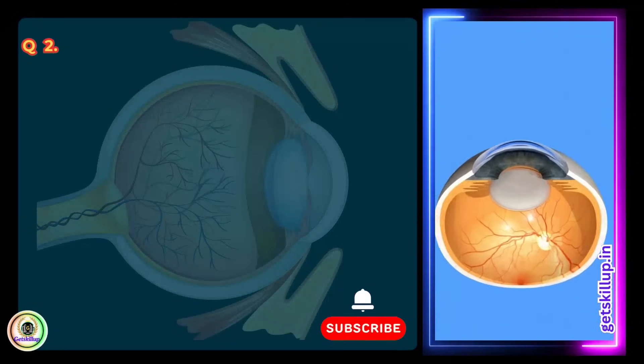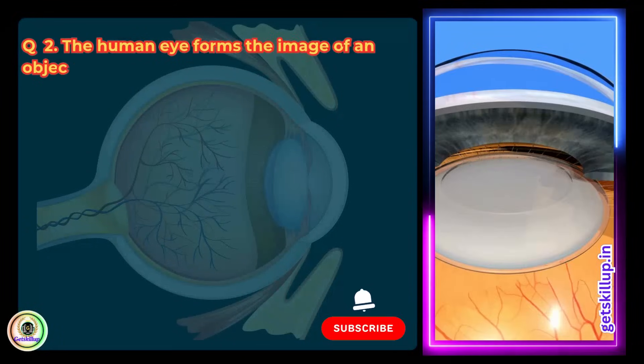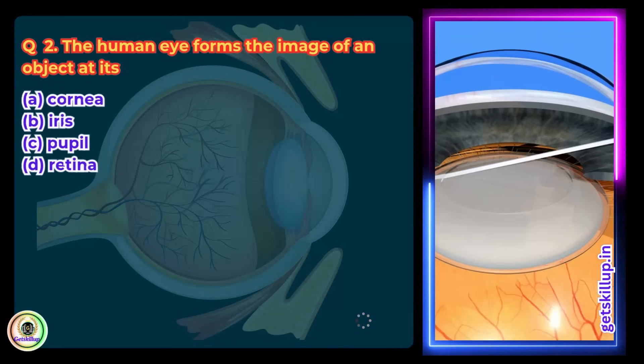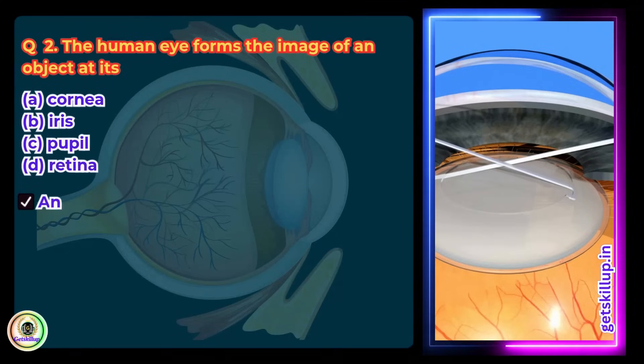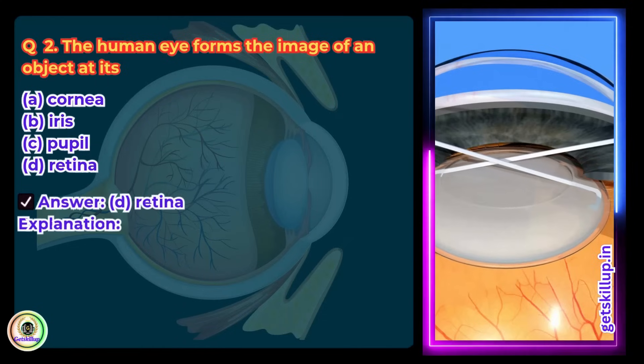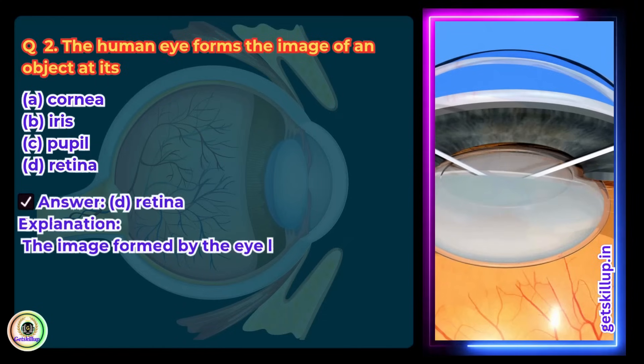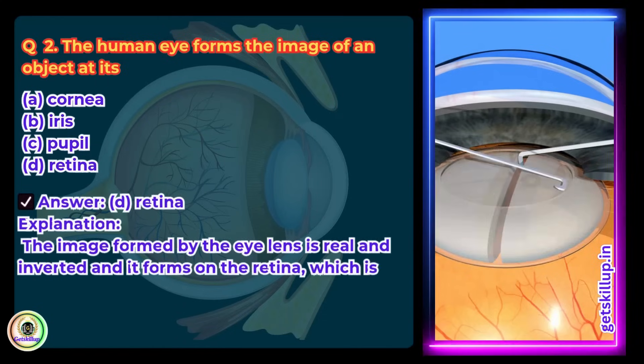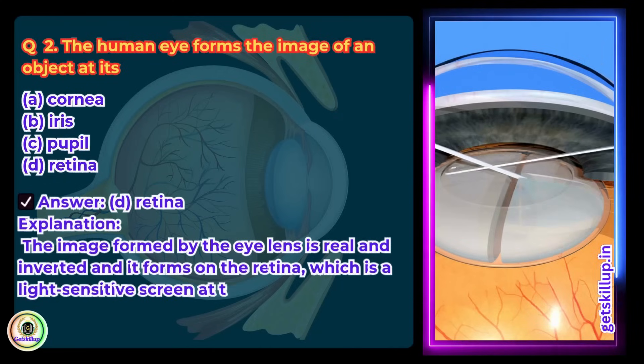Question 2. The human eye forms the image of an object at its: A. Cornea, B. Iris, C. Pupil, D. Retina. Answer: D. Retina. Explanation: The image formed by the eye lens is real and inverted and it forms on the retina, which is a light-sensitive screen at the back of the eye.